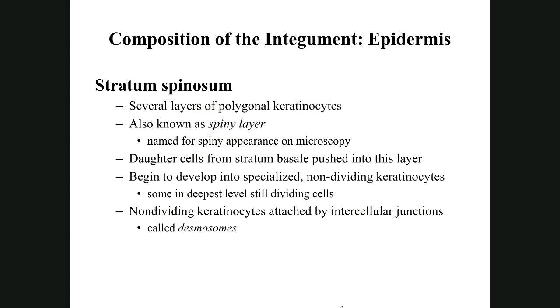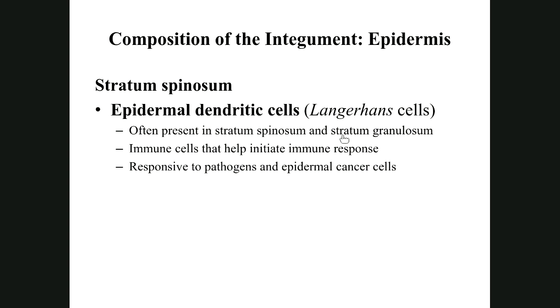Also in the stratum spinosum are Langerhans cells, also called epidermal dendritic cells. These are immune cells that respond to pathogens and also to skin cancer — specifically superficial, epidermal skin cancer. These cells help prevent skin cancer from developing as often as it does, but skin cancer is still the number one type of cancer encountered in the U.S., largely because we don't protect ourselves as often as we should.